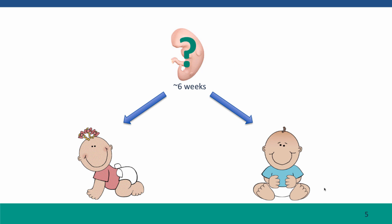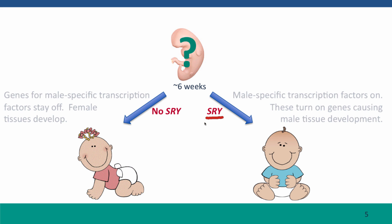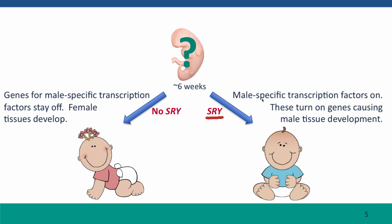Here's how that works. Up until about six weeks of development, what starts as a fertilized egg, then an embryo — and by six weeks we call it a fetus — is undifferentiated with respect to sex. There are no male or female tissues yet developed in this fetus. But at about six weeks of gestation, the expression of the SRY gene produces a protein called SRY that causes activation of genes for male-specific transcription factors. These transcription factors, in turn, turn on the genes that cause male tissues to develop. If there's no SRY, then the male-specific transcription factor genes stay off and the fetus develops as a female.